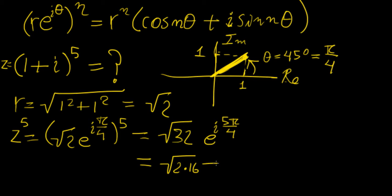So we can rewrite this as 4 square root of 2 e to the power of i 5 pi over 4.